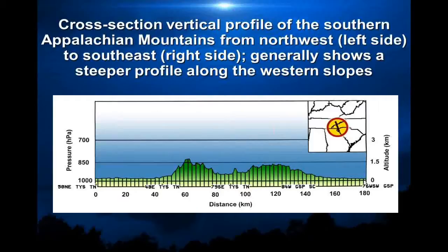Here on the western side of the mountains, we probably have stronger mountain waves than on the eastern side. When winds come from the northwest, you get mountain waves developing on the eastern side, but theoretically we should have stronger winds on the western side. Of course, it's difficult to completely verify because we don't have enough observation sites around the mountains to really know for certain what's going on.